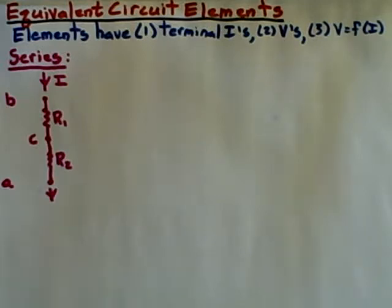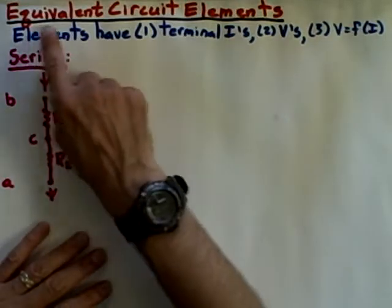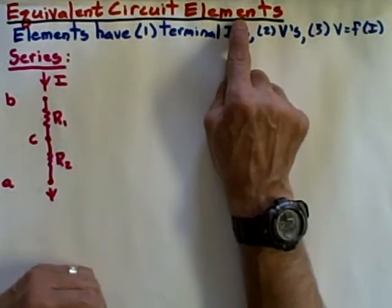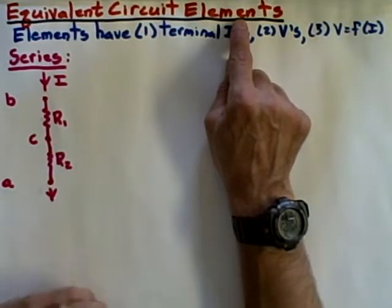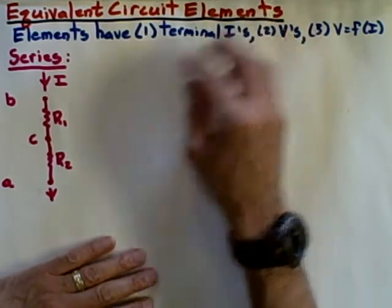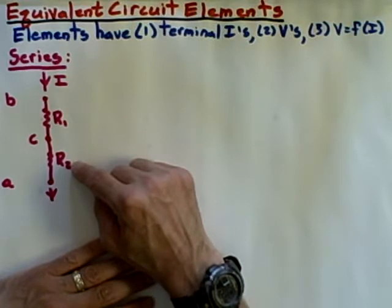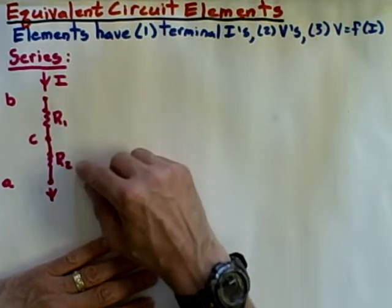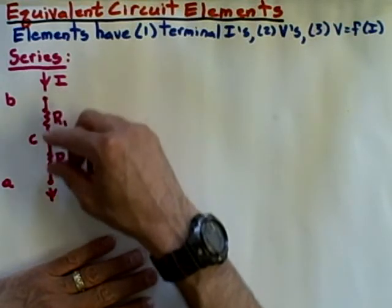In this podcast, I'd like to cover the very powerful concept of equivalent circuit elements. The basic idea here is that if you have some combination of circuit elements, maybe two resistors, as I've shown you here in the classic series combination, wired one after the other.